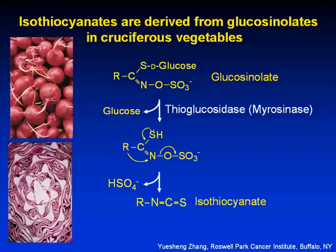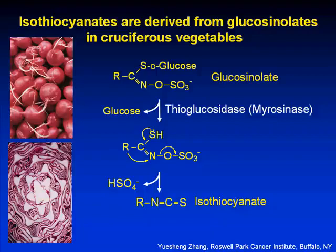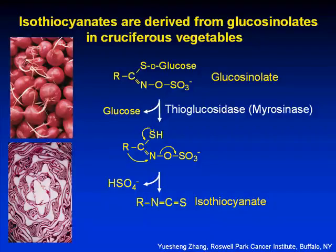By way of an example: if you ate all of your cruciferous vegetables raw and chewed them really well, you would be exposed to very high concentrations of isothiocyanates, because the plant itself contains the enzyme myrosinase that can carry out this hydrolysis reaction. However, when you look around the world, there are very few cuisines where cruciferous vegetables are consumed raw — we usually cook them extensively.